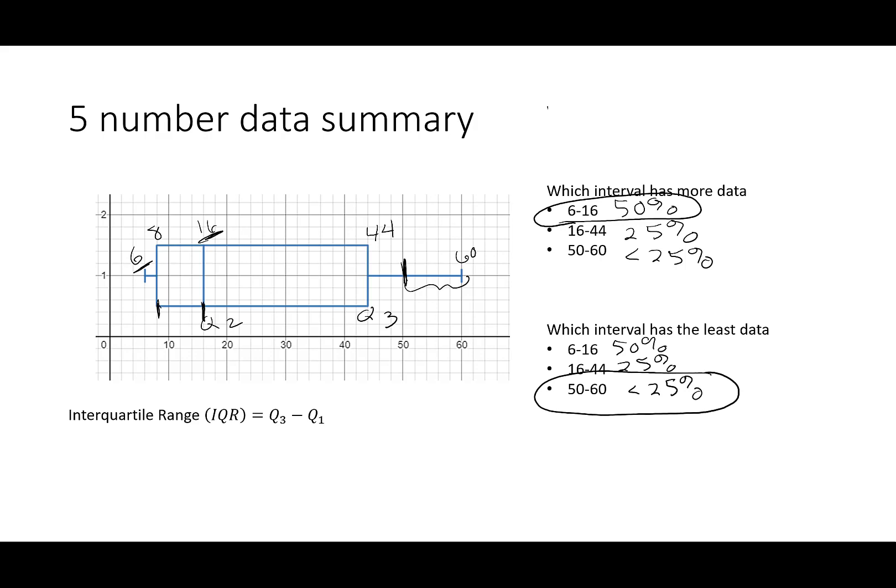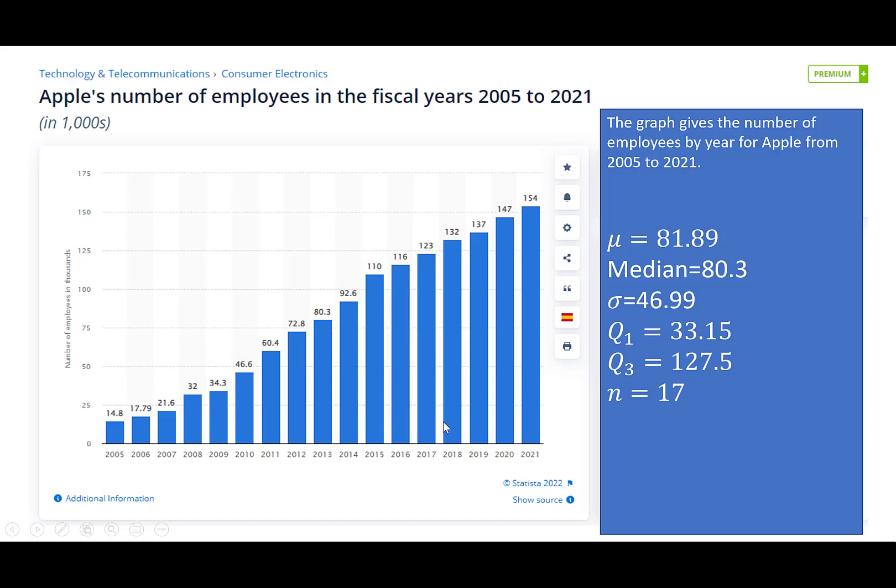So this graph gives the number of employees by year for Apple from 2005 to 2021. And because this is entirely, I said that the mean here is for population, it's 81.89.